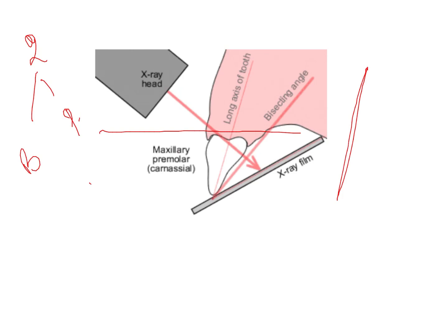The bisecting angle technique is different. You have the long axis of the tooth, and the X-ray film is placed at an angle to the long axis. This angle creates an imaginary triangle between the long axis of the tooth and the X-ray film.